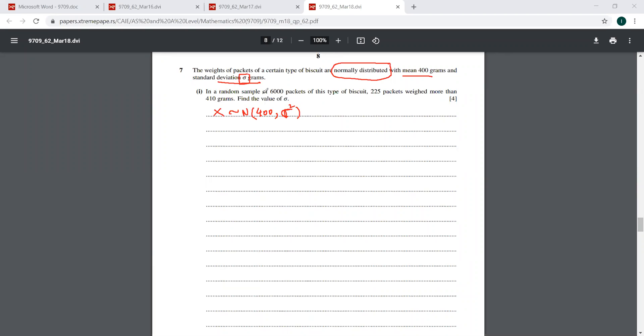In a random sample of 6,000 packets of this type of biscuits, 225 packets weigh more than 410 grams. It's very clever, it's giving you the probability indirectly. So you have to write it down. The probability that X is more than 410 is 225 over 6,000. That is how you have to take it.